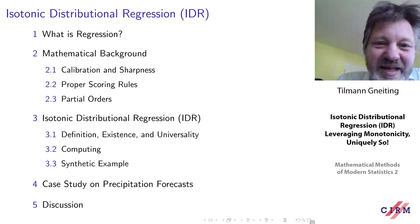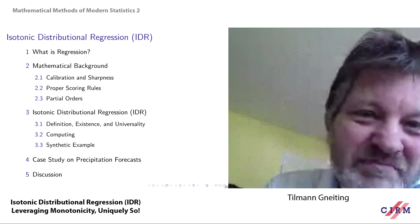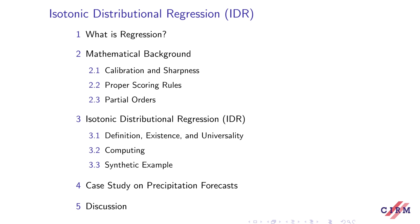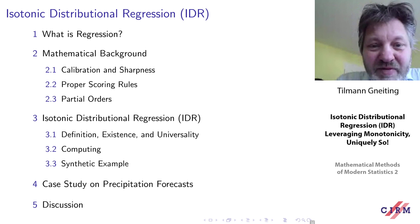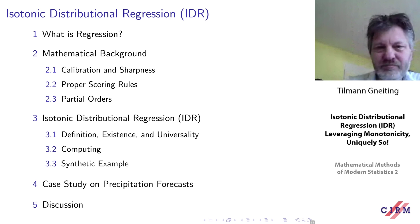Here is a more formal preview of what I'm going to show in the next 50 minutes or so. We will start with a historical and pictorial review of regression, then turn to a mathematical background. Some of the mathematics is classical, such as the theory of partial orders and partially ordered sets. Various notions of calibration and proper scoring rules are perhaps not so classic, and I will spend more time on introducing them. Then I will turn to the theory, methodology, and computing for IDR, closing with a case study on numerical level prediction, precipitation forecasts, statistically post-processed precipitation forecasts, and discussion.